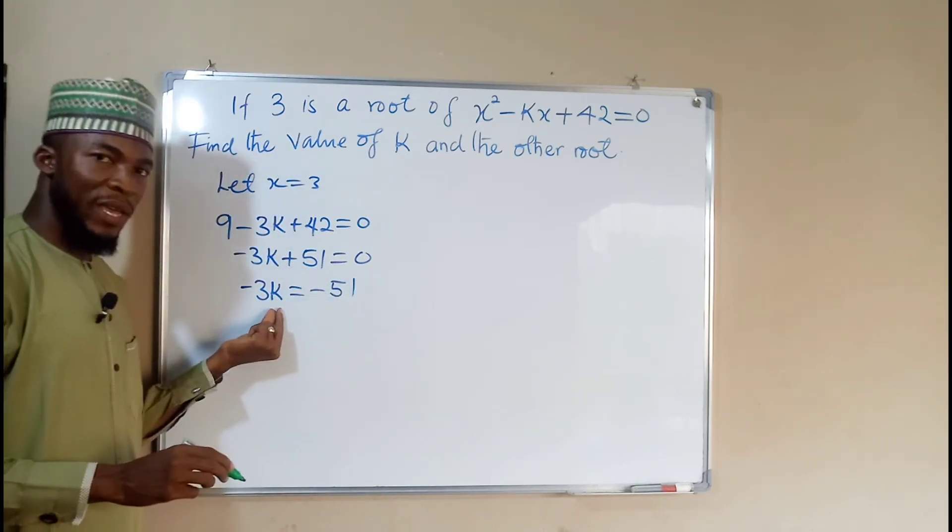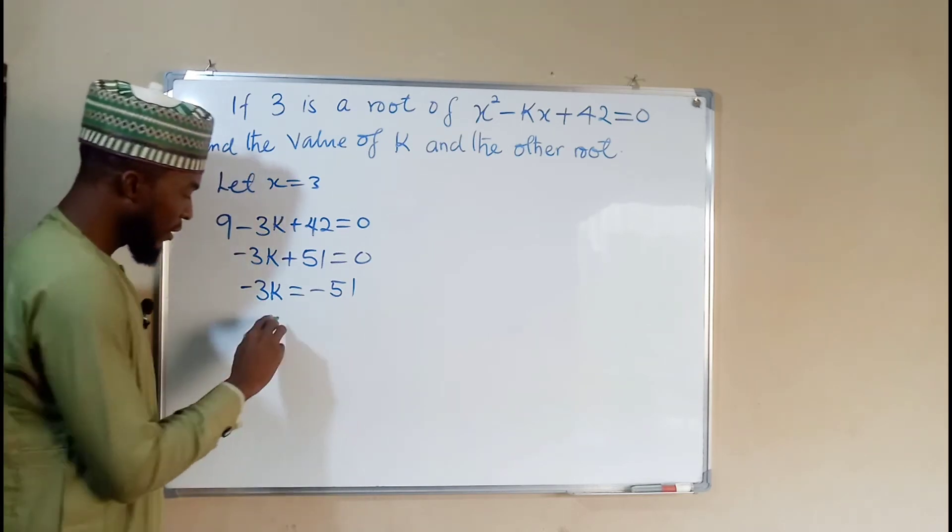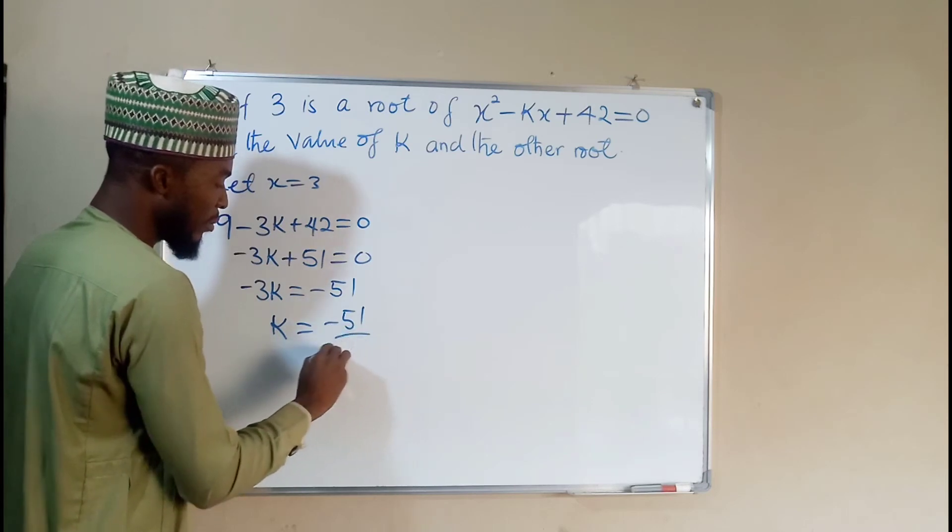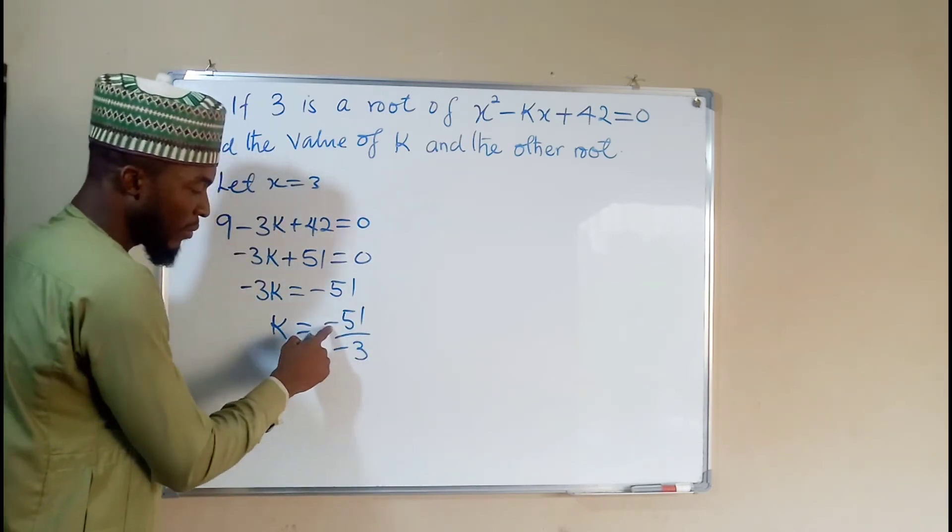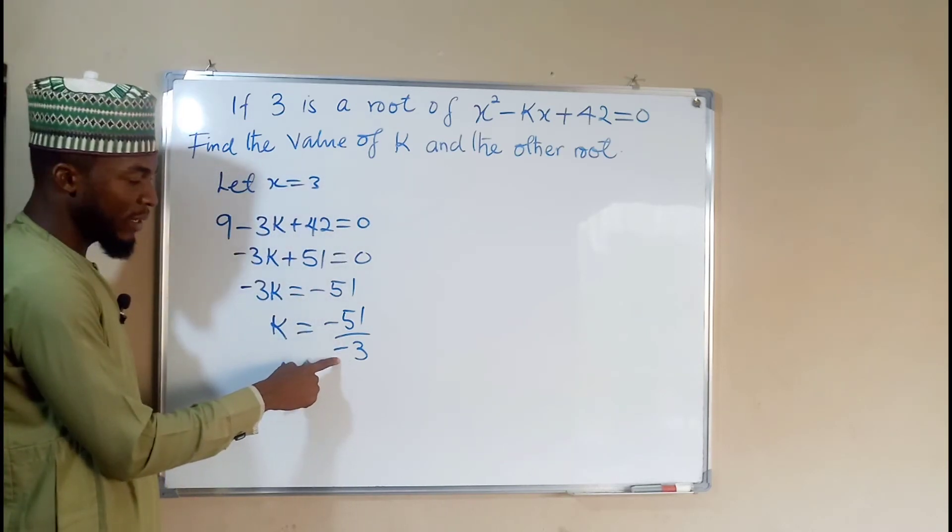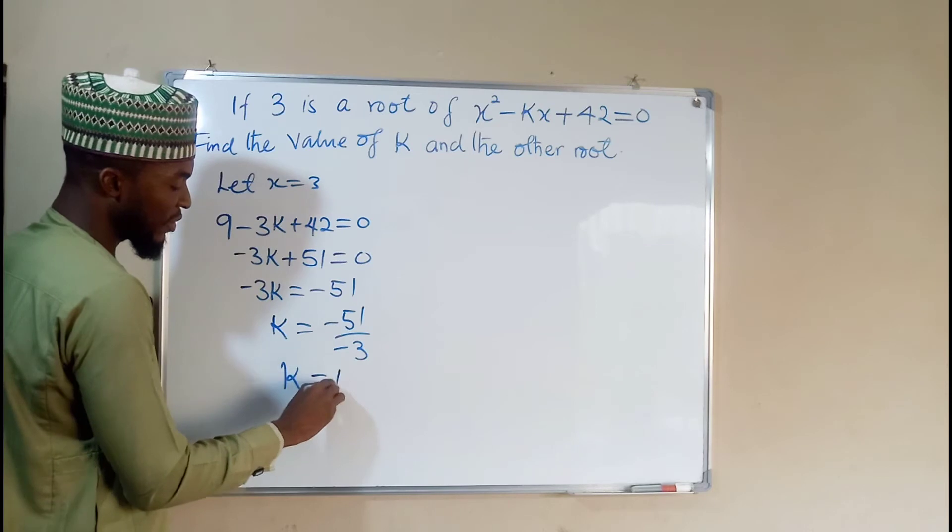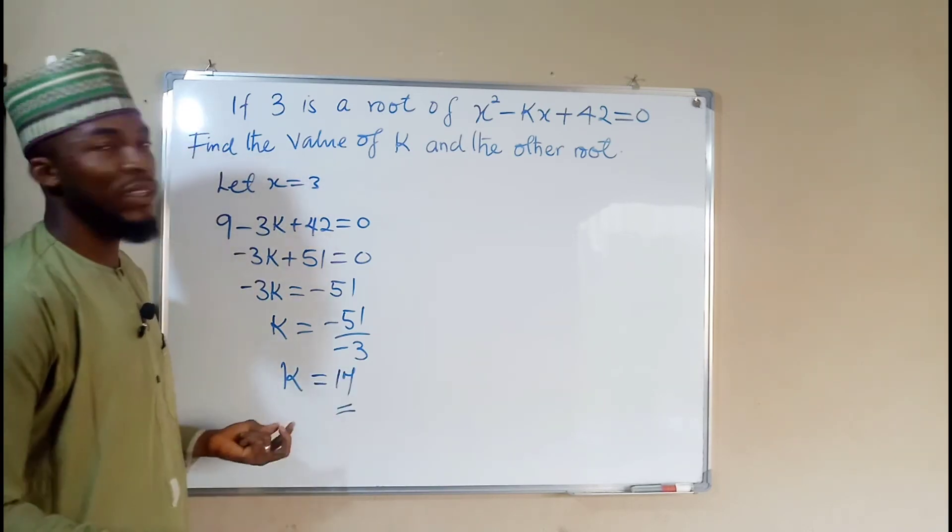To find the value of k, we divide both sides by the coefficient of k, which is negative 3. So k alone is equal to negative 51 divided by negative 3. K equals negative will cancel negative. 51 divided by 3 is equal to 17. And hence, k is equal to 17 as required.